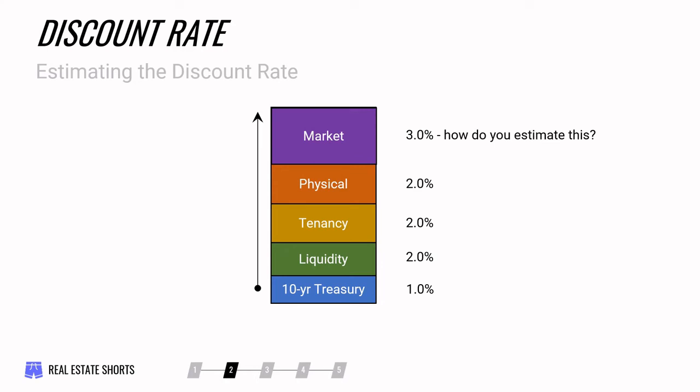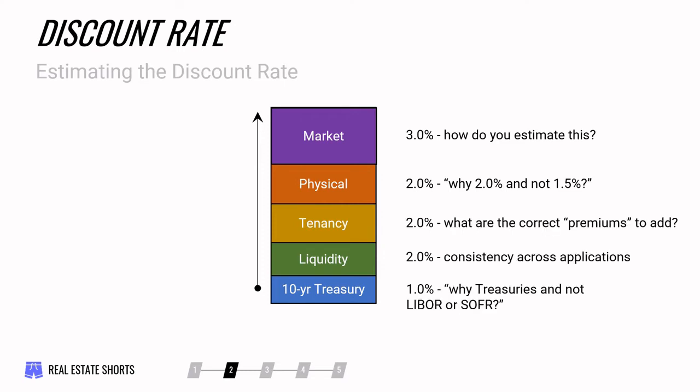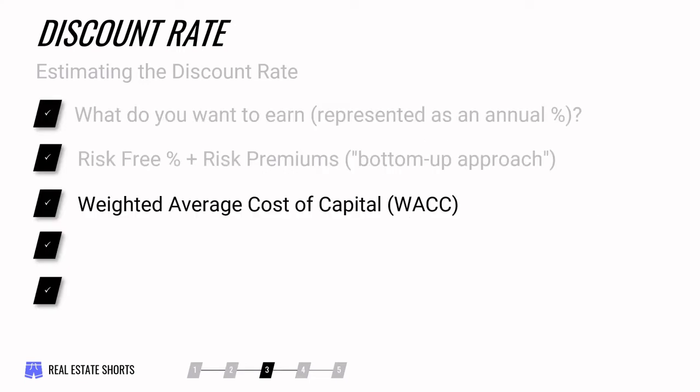The problem with this approach, however, is how do you estimate each one of these different premiums? If it's a 2% premium for physical risk, why is it 2% and not 1.5%? What are the correct premiums to add? These are very uncomfortable for a lot of investors because there's not a good way to answer them, and there are certainly only challenging ways to support why you answered them the way you did. So if we move on — what's the next alternative if that one's so difficult?